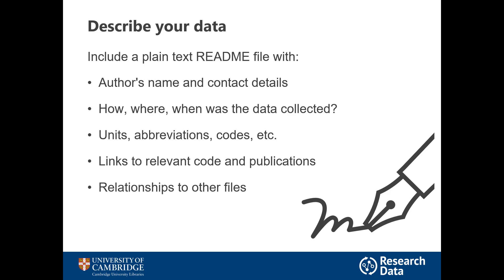You can also go back and add these links in afterwards if the publications arise at a later date. You'll also want to describe the relationships between files. For example, say there is a spreadsheet that gives detail of the images and then a whole load of image files that are named in a certain way. You need to explain that so that people can orient themselves in the dataset as soon as they jump in. And you'll want to include any instructions that people need to actually open and use the data — for example, do they need to download a particular software?